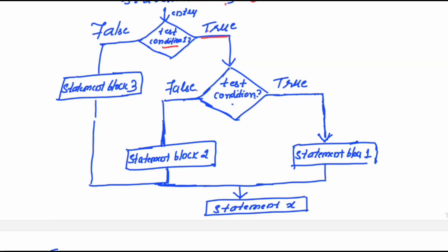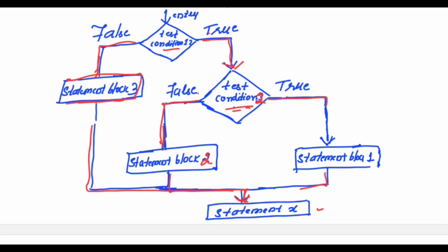Test condition 1 is tested. If it is true, you check condition 2. If condition 2 is also true, whatever statements are inside the block for condition 2 will get executed, and then statement x will get executed. If condition 2 is false, whatever statements are in the else part of condition 2 will get executed, then statement x executes. Suppose if condition 1 itself becomes false, then the statements in the else part of the outer if will get executed, followed by statement x.